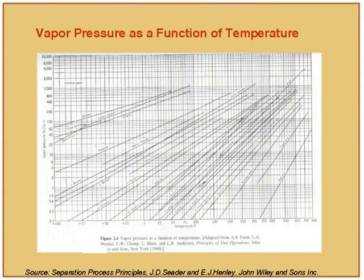When using the unsymmetric or liquid activity coefficient model approach, we require the standard state fugacity, which typically is related to the vapor pressure of the pure component. So we must recall how vapor pressure depends on temperature. This plot — sometimes called a Cox chart — has vapor pressure on the ordinate on a logarithmic scale and a 1/T scale on the abscissa, where T is absolute temperature. The scale is specially designed so these curves remain straight lines.